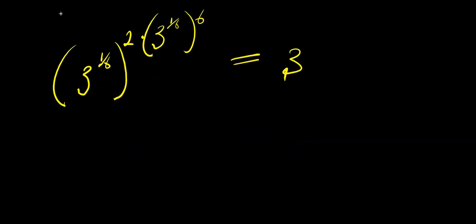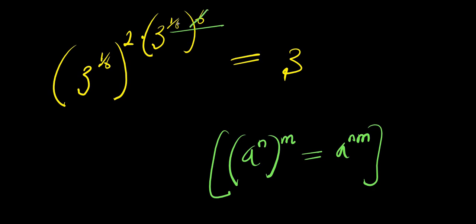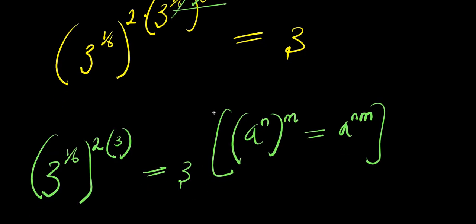So we consider the identity: a to the power of n raised to the power of m equals a to the power of n times m. We have three to the power of one over six, and this is three to the power of one over six. One over six times six is six over six, and six over six cancels to one. So we simply have three to the power of one over six, and this equals three.